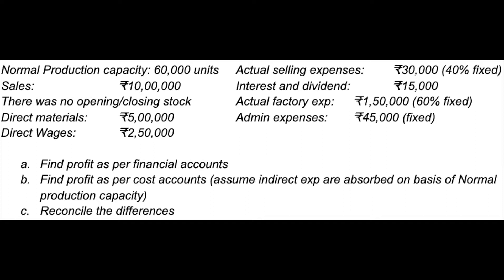Now let's look at a practical problem. Normal production capacity is 60,000 units. Sales are 10 lakhs; opening and closing stock are nil. Direct materials and wages are given. Actual factory expenses are 1,50,000 of which 60% are fixed (90,000 fixed). Administrative expenses are totally fixed. Actual selling and distribution expenses are 30,000, of which 40% (12,000) is fixed. Interest and dividends income is also given. We need to find profit as per financial accounts and as per cost accounts, assuming indirect expenses are absorbed on the basis of normal production capacity.